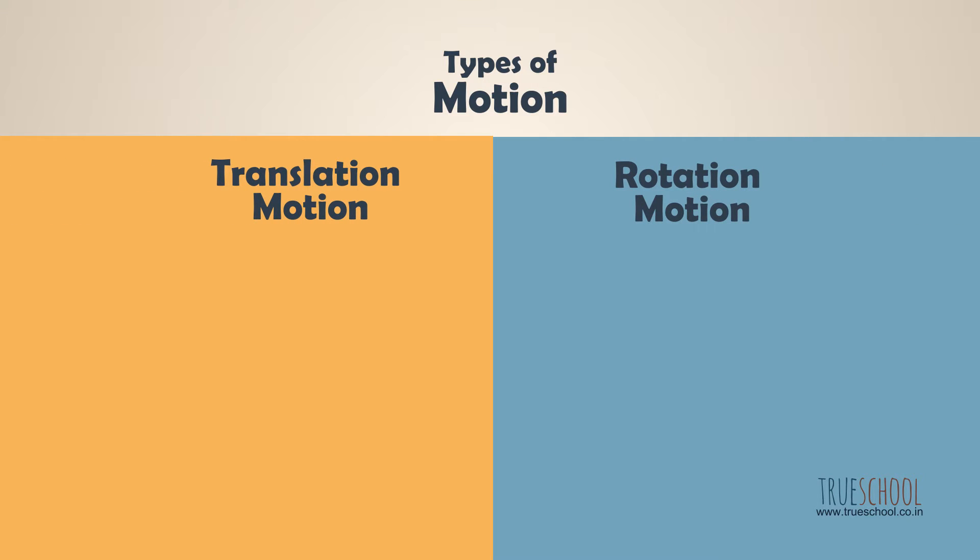To understand motion, it's broken into two different types: translation and rotation motion. Translation is again broken down into three independent single dimensions for easier analysis.